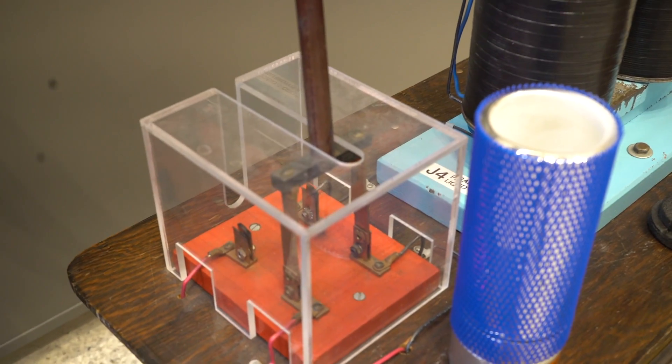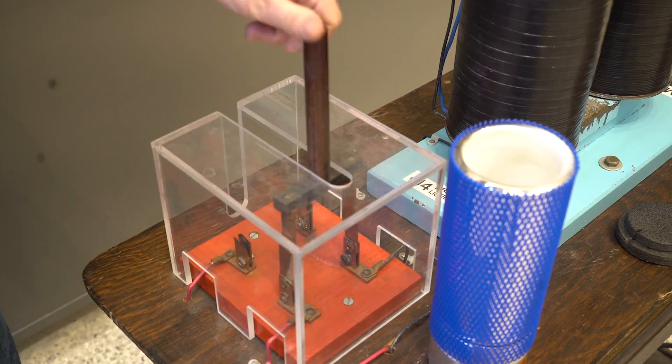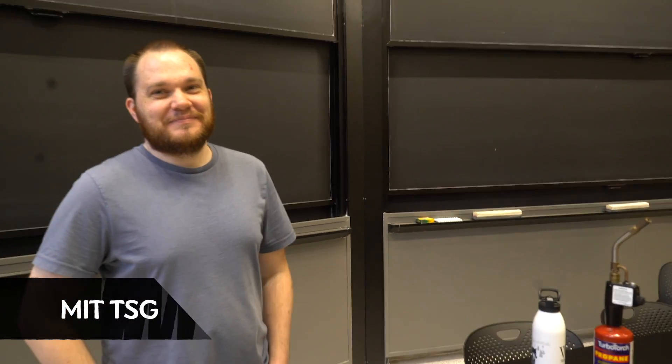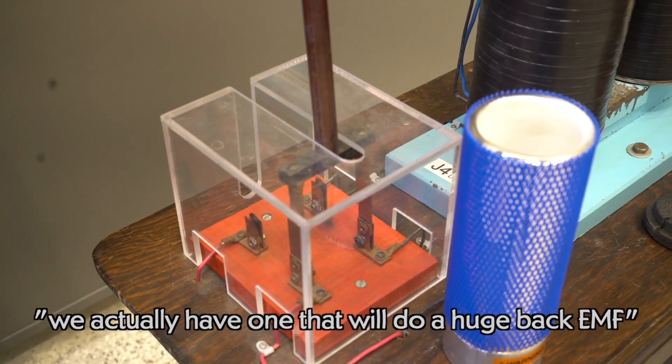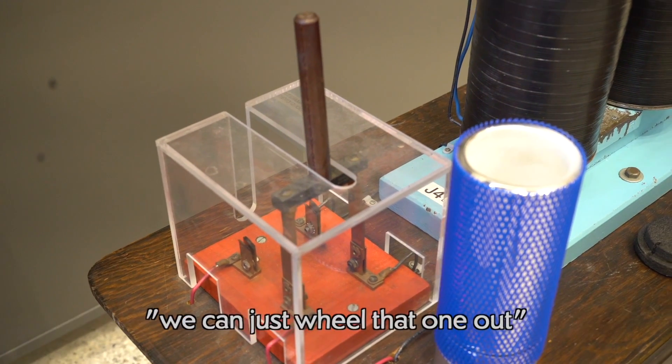Anyway, the real hero of my easily amused physics-loving heart was the tiny spark that forms when you turn off the electricity to the electromagnets. Because Josh, the gentleman from the MIT technical services group showing me these demos, promised a demo with an even bigger spark. We actually have one that will do a huge back EMF when you lift it. We could just wheel that one out.